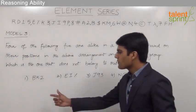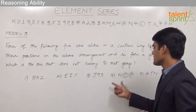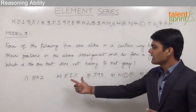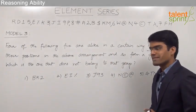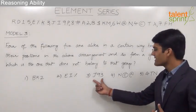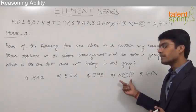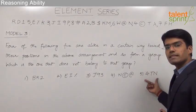So here five groups are given in the question. The first group is BK2, the second group of elements is EI percentage, the third group or triplet of elements is J93, the fourth one is N copyright at the rate and the fifth one here is 4TN.